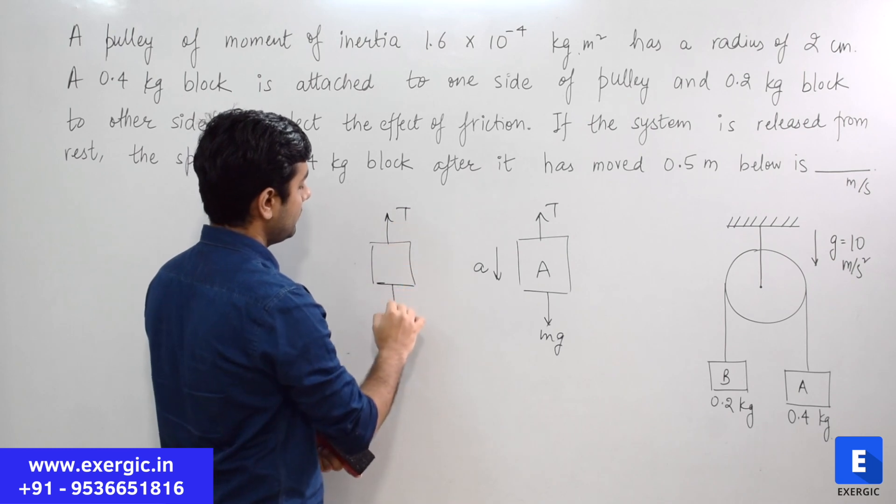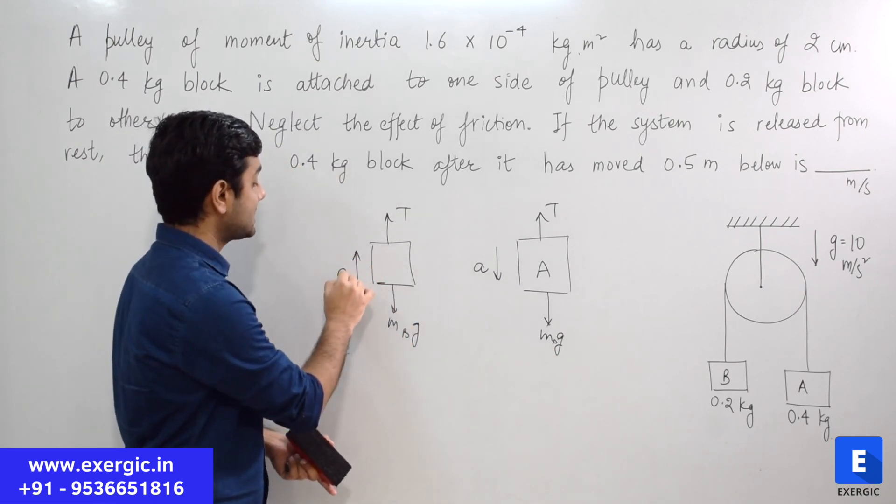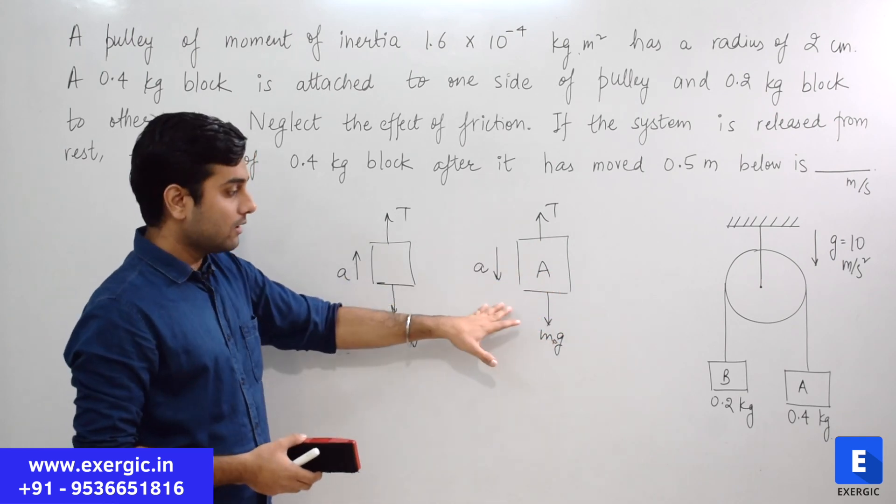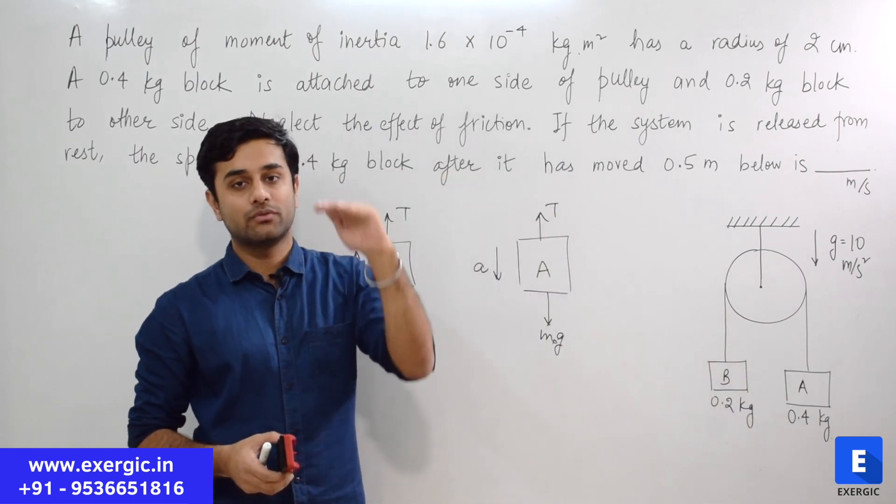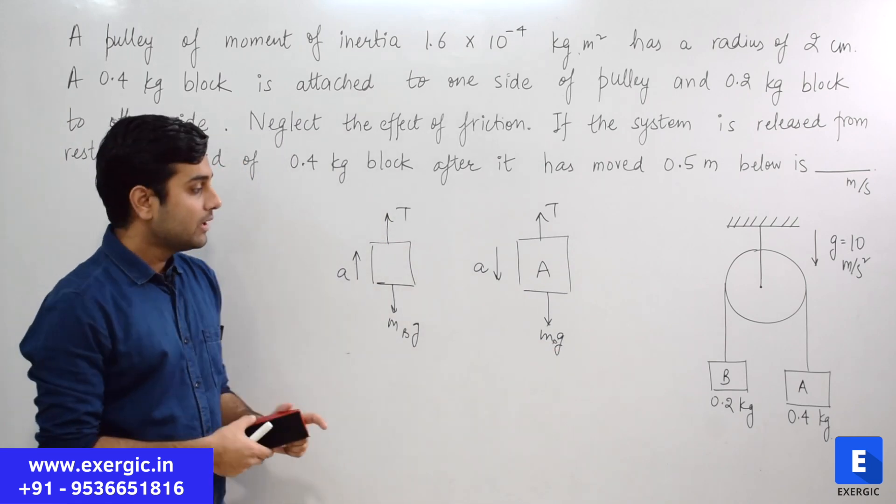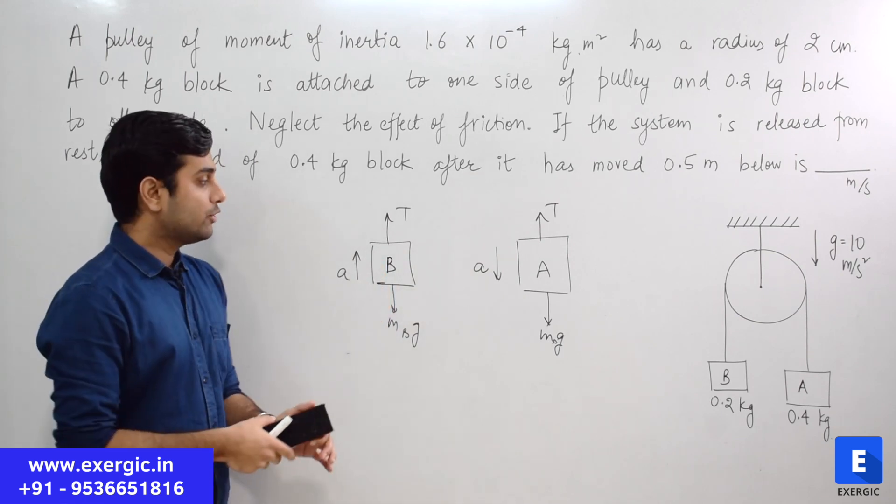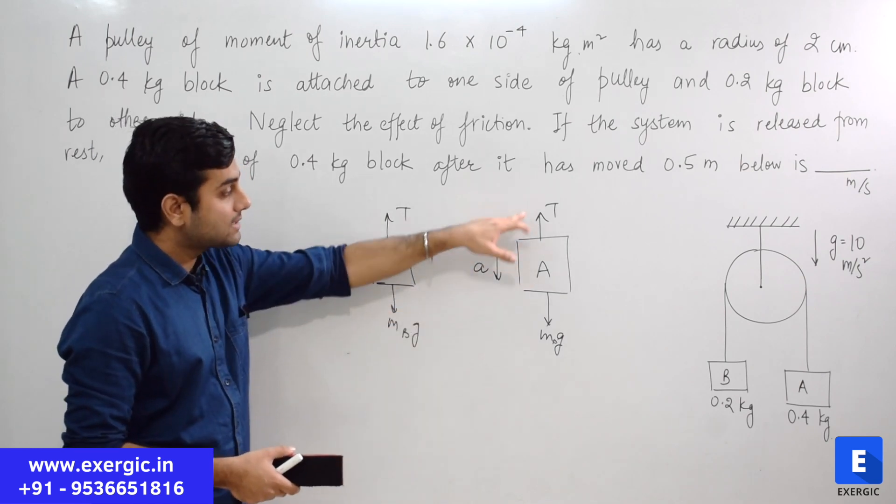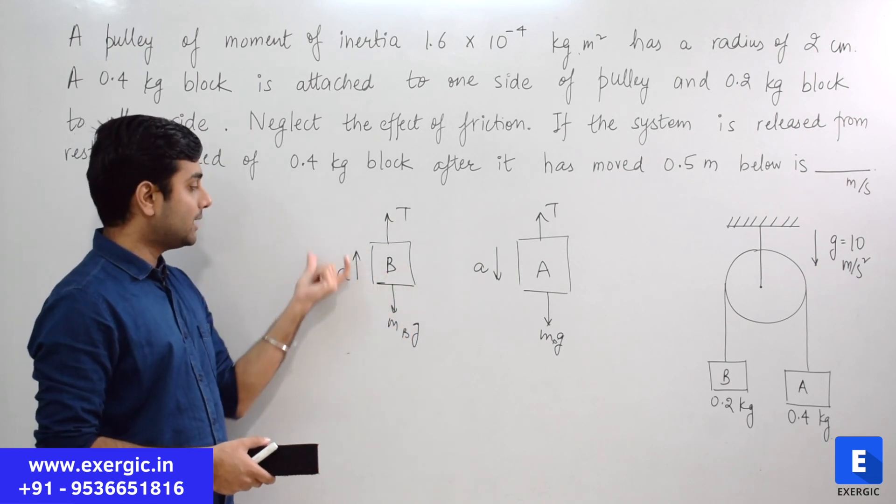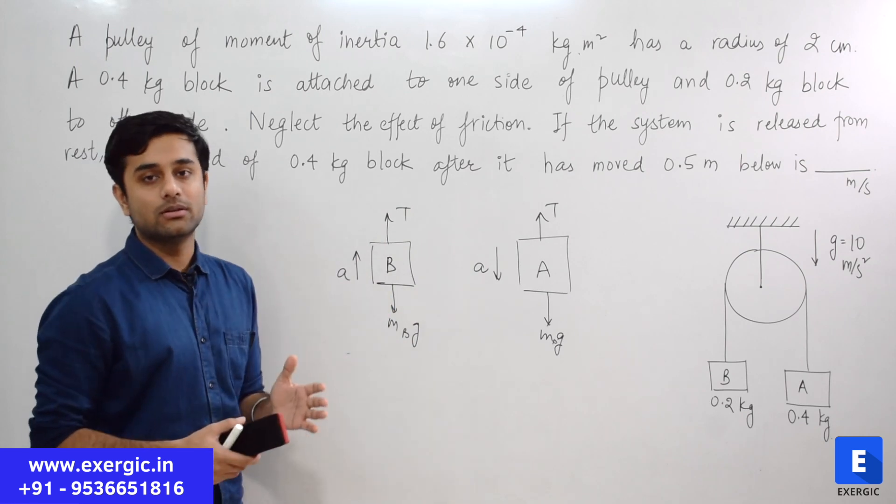They will draw the free body diagram. Tension T, weight is acting downward Mg, and A is accelerating down with acceleration A. Using this they will write one equation. T and A are unknown. Similarly for B, they will write another equation. Tension is obviously up, weight is down. In this case, acceleration will be upward and same acceleration will exist. So acceleration of B will also be equal to A but in the upward direction. You will write equations MAG minus T equals MA for block A, and T minus MBG equals MB times A for block B.